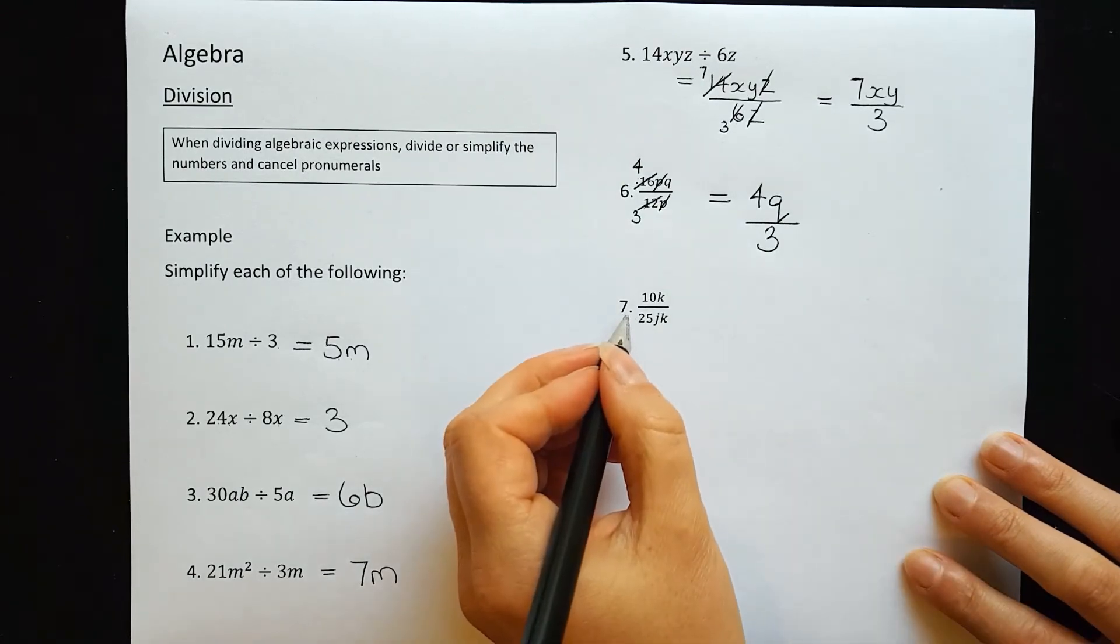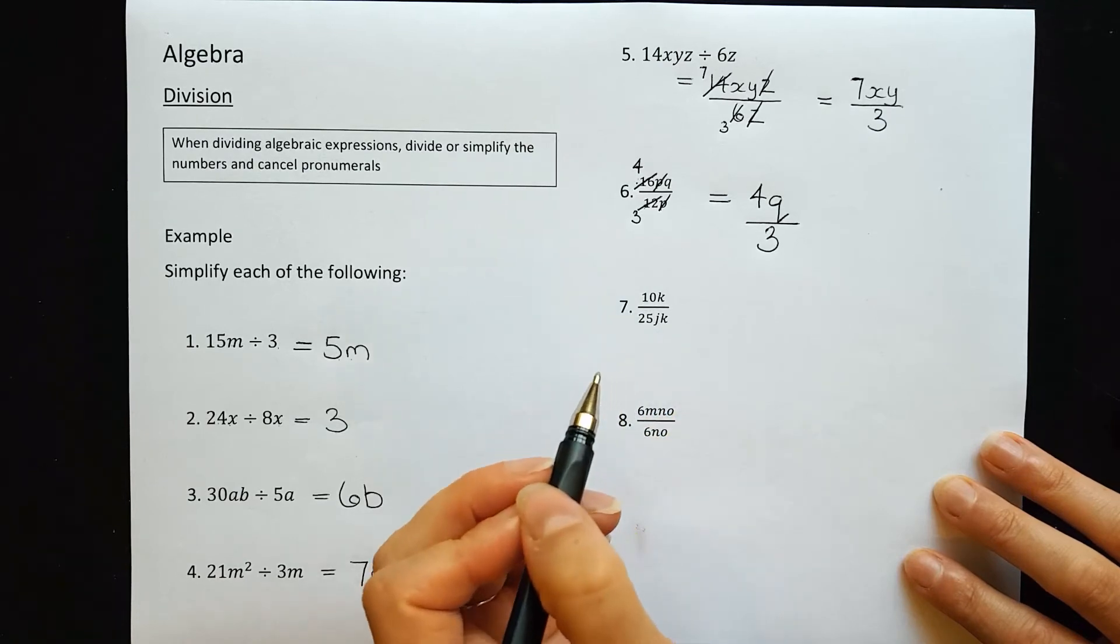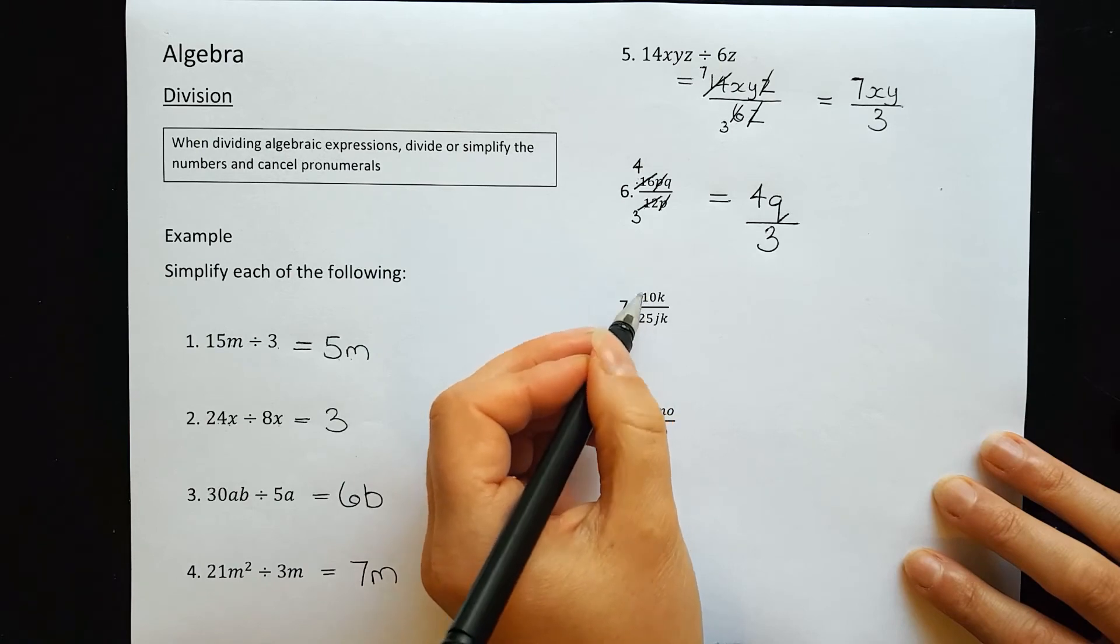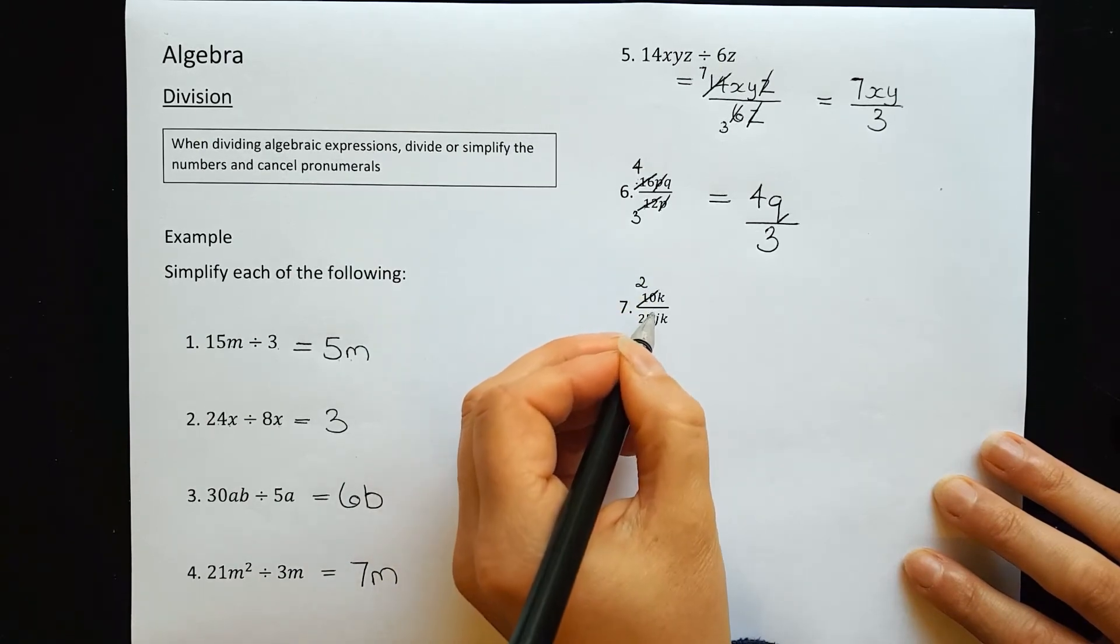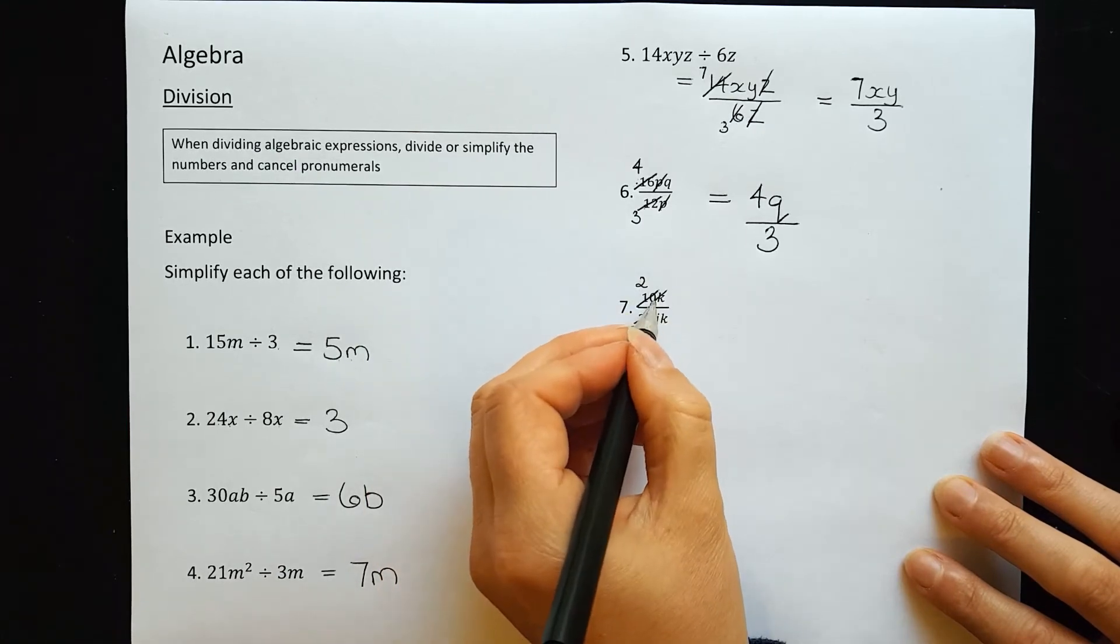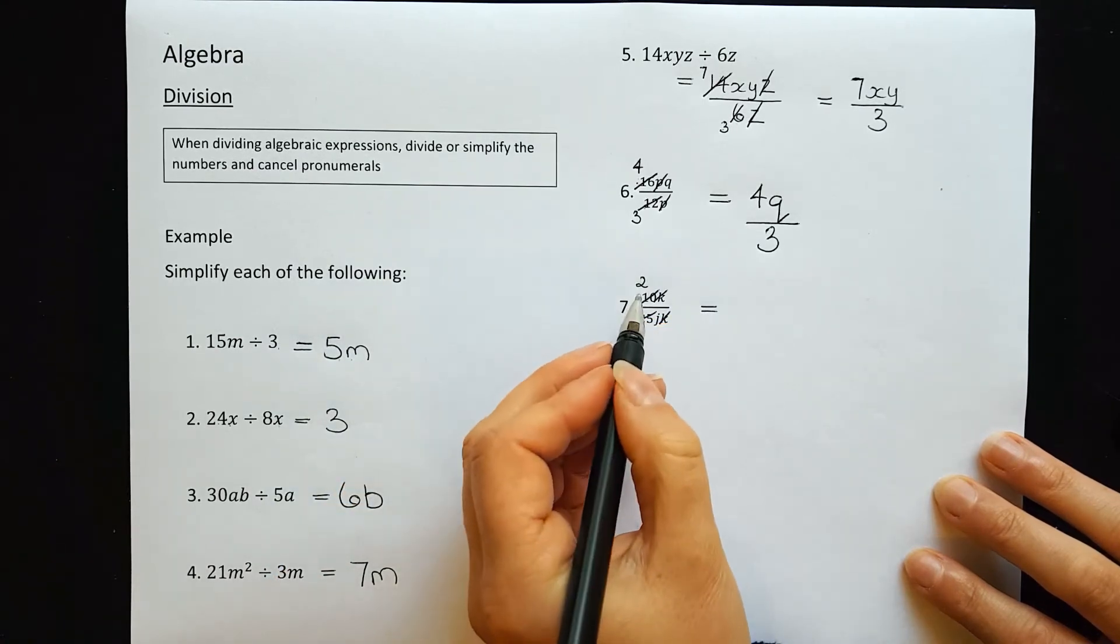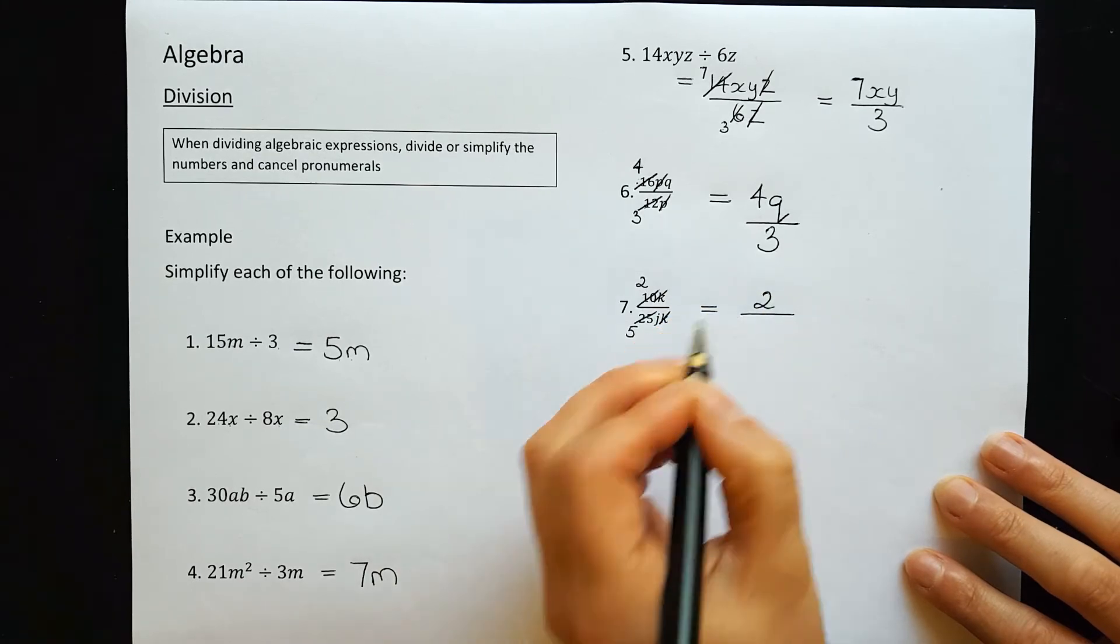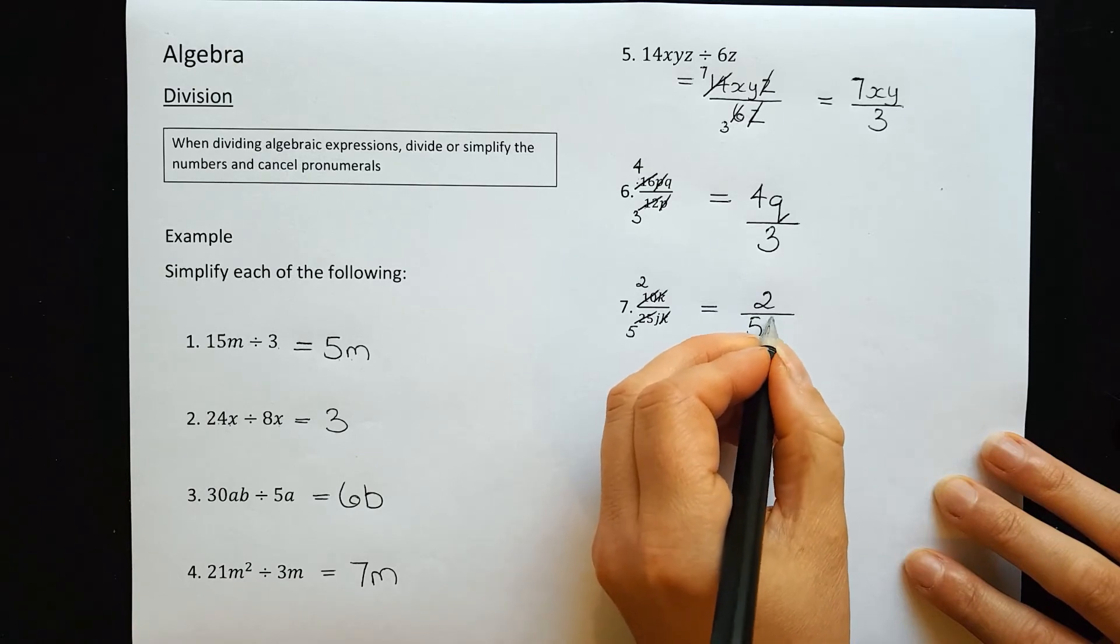Question 7: 10k over 25jk. Looking for things I can simplify: 10 and 25 can be divided by 5 to get 2 and 5. There's also a k on top and bottom to cancel out. What's left: we have 2 on top, and on the bottom I have 5j.